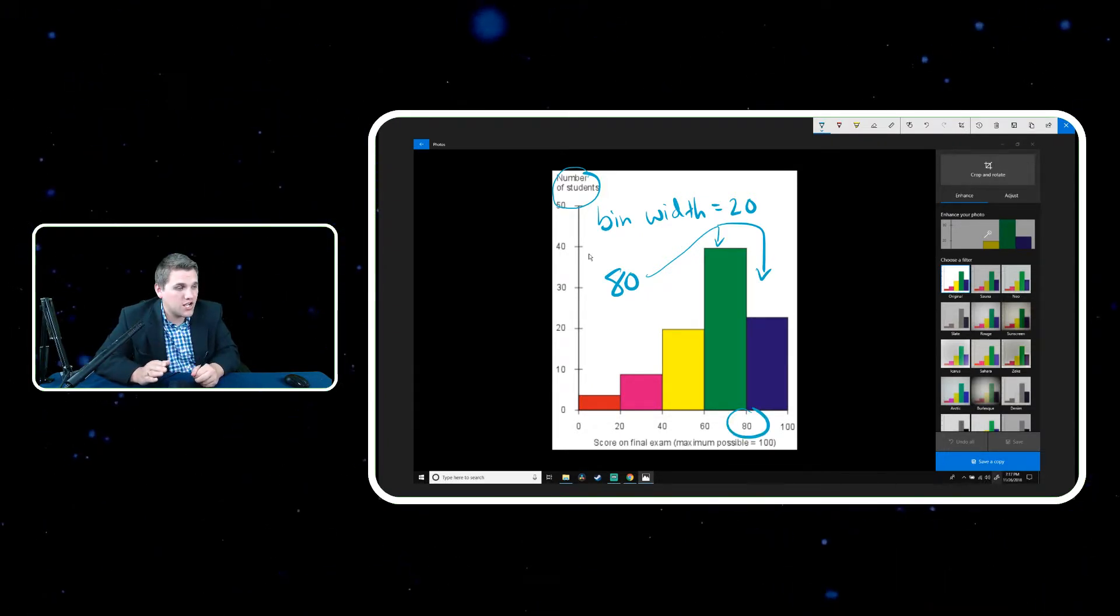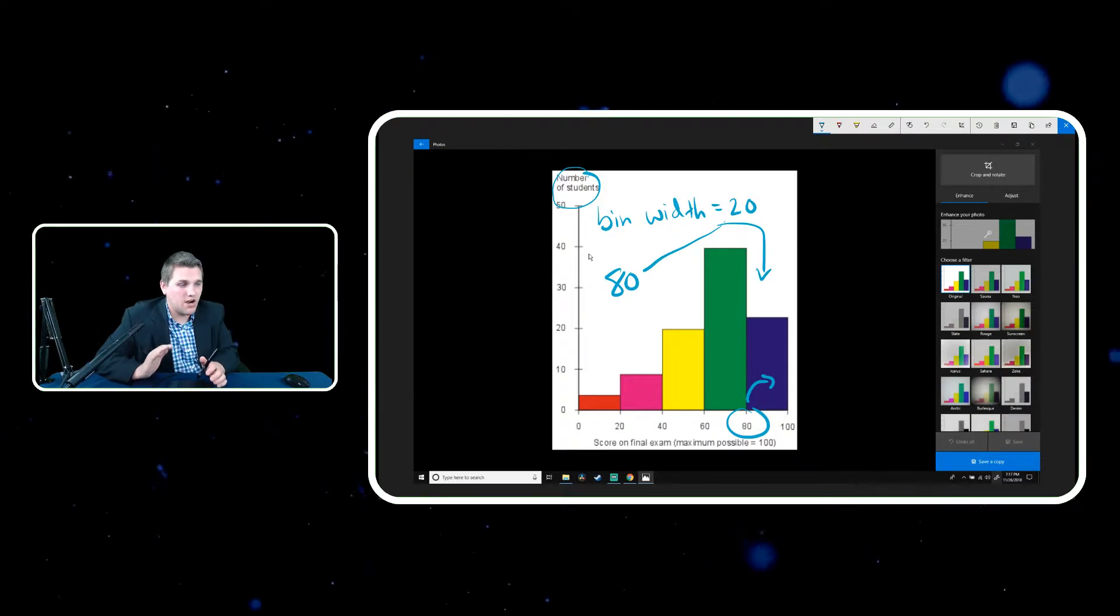And the answer is always the right bar. That's how histograms work, at least. So 80 would be represented by that bar right there, this one right here, this blue one. So just keep in mind, that is actually really important when we are organizing our data.